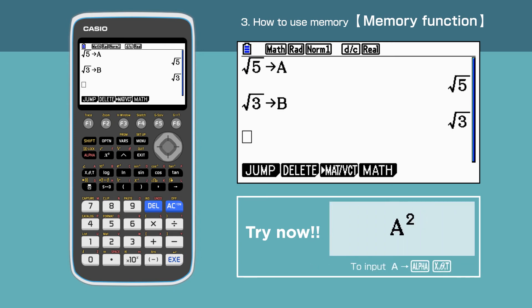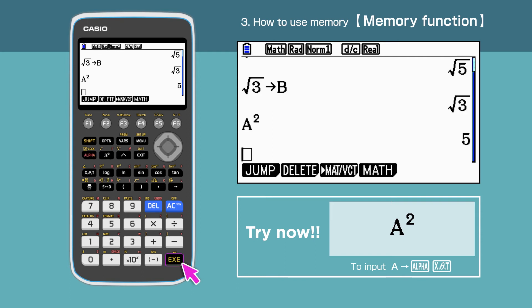Now, we are going to find A squared. Enter A squared. We have got the answer 5.